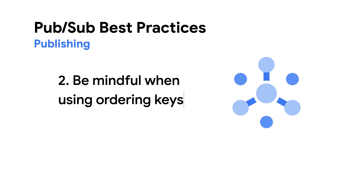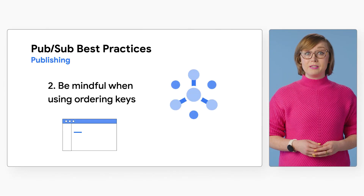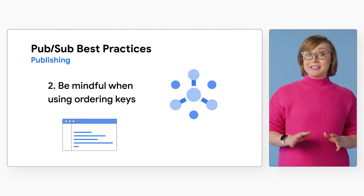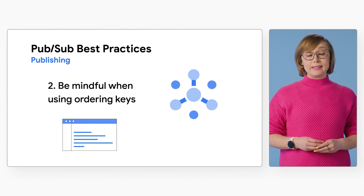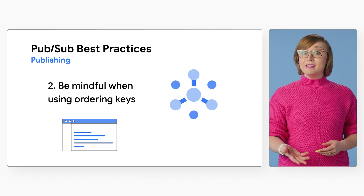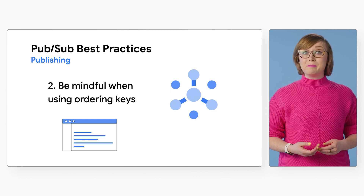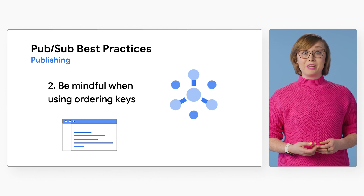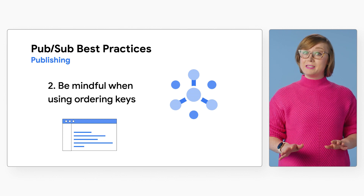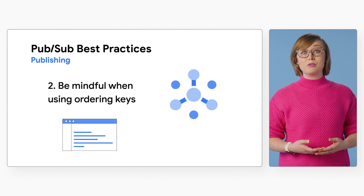Check out links in the description below for a blog post with more information. Number two: be mindful when using ordering keys. Publishing messages with an ordering key might slightly increase end-to-end message delivery latency, since Cloud PubSub takes steps to coordinate the storage and delivery of messages across different servers when using ordered delivery.